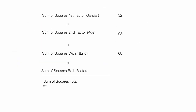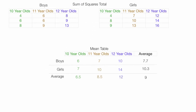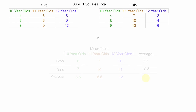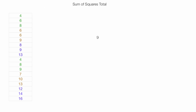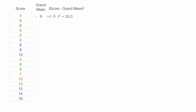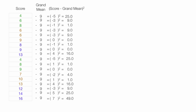Now I'm going to calculate the sum of squares total. I take each test score and compare it against the grand average of 9. I make one big column of all test scores. So 4 minus 9 equals negative 5, squared equals 25; 6 minus 9 equals negative 3, squared equals 9. I fill in the rest — taking each individual test score minus the grand mean and squaring it — and sum them all up. This sums to 200.